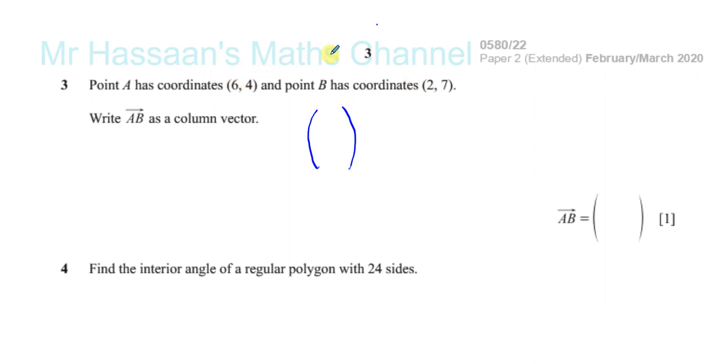So the horizontal component will tell us how to get from A to B. To get from 6 to 2, you've got to go down by 4 units. And for the Y component, to get from 4 to 7, you have to go up by 3 units. So it's as simple as that. That's the vector from A to B: minus 4, 3.